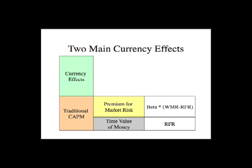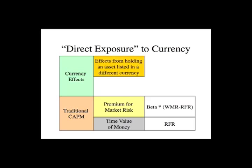On top of traditional CAPM, you have currency effects, and there are really two of them. One reason this material can get confusing is that I haven't often seen a very clear distinction between these two. The first is what you might most obviously think about when investing in an international asset — simply the effect from holding an asset listed in a different currency. For example, if I own Petrobras, which is listed on the Bolsa de São Paulo, its price is quoted in Brazilian reais. The stock might earn 15% over the year in the local currency, but if the real devalues by 10%, you may have only gotten 5% in dollars.